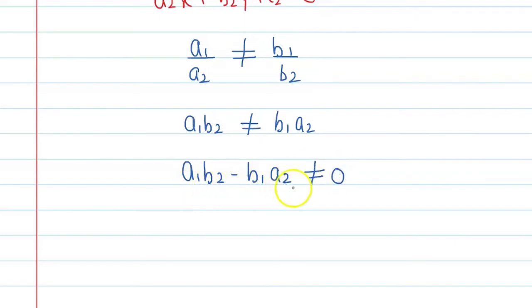So this is the condition for which we can say the given system of equations has a unique solution. All right. So let's have the final answer. So the correct option is B. All right. Thank you.